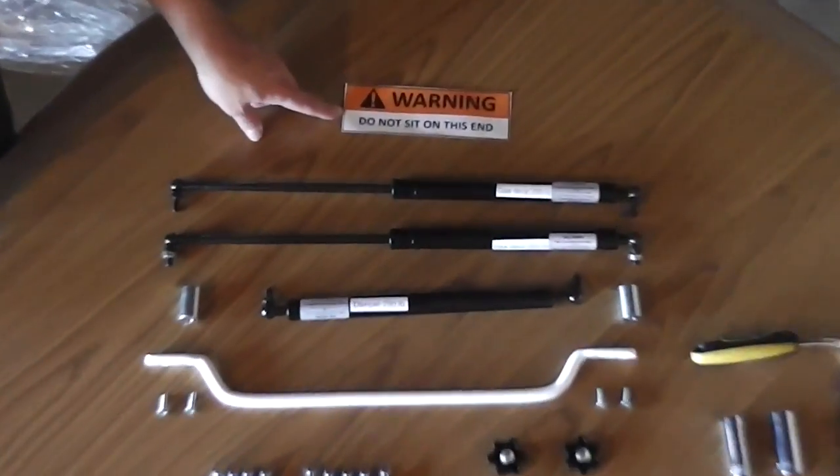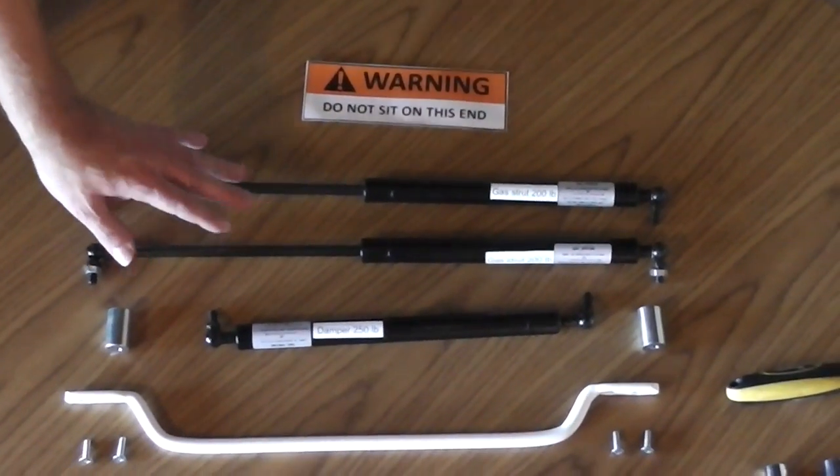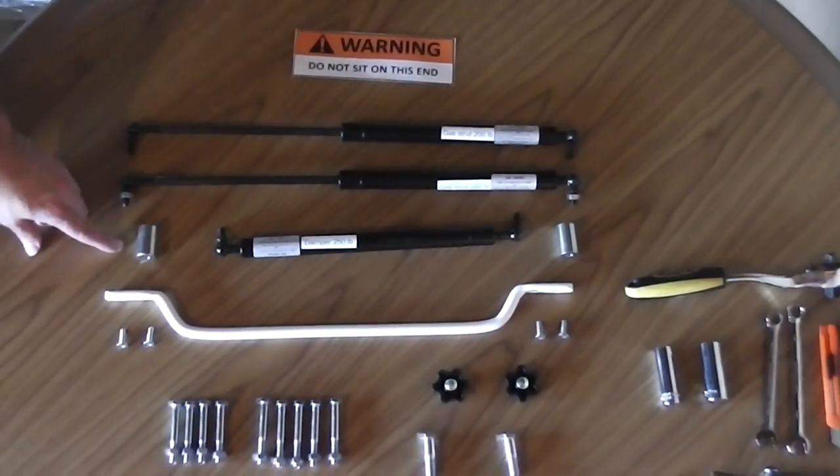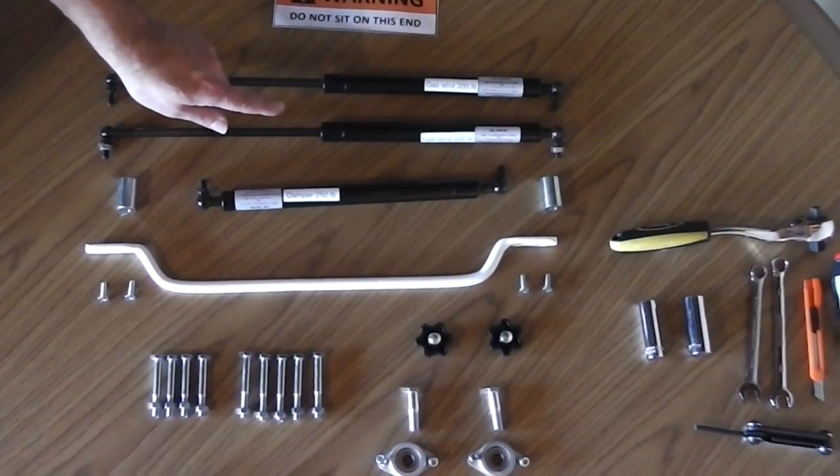Parts you will have: warning sticker, two gas struts, a damper, and the spacers for when you attach the damper onto the gas struts.